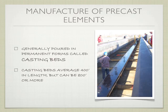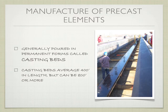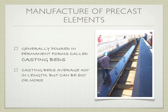Moving on to the manufacture of precast elements — let's talk about the actual fabrication plant. To make these elements you need a permanent form that can be reused over and over again, rather than building wood formwork each time. This permanent form is called a casting bed. The casting bed averages somewhere between 400 and 800 feet in length — really long. Instead of casting one 60-foot piece at a time, you can cast 10 of them totaling 600 feet in one bed, making it more efficient.